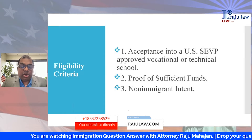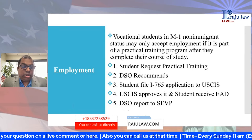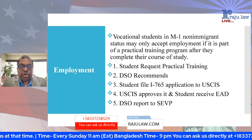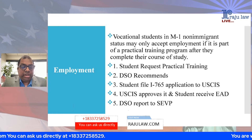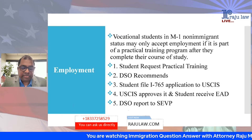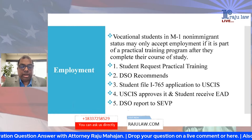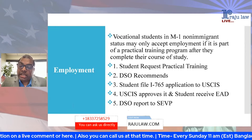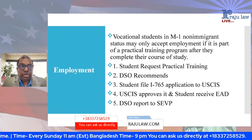A lot of people ask: when in America under M1 visa, am I eligible for employment? The answer is yes, however M1 visa's employment requirements are very different from F1 visa categories. There is no OPT, CPT, or OPT extension applicable under M1 visa. Vocational students in M1 status may only accept employment if it is part of a practical training program related to their field of study, and only after they complete their course of study.